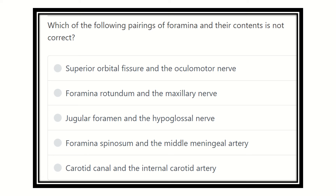Hi everyone, welcome back to another video for the MRCS exam. This is the question and answer session, which provides a lot of help in preparing for the MRCS exam. The question is: which of the following pairings of a foramen and its content is not correct? We have to find out which is incorrect — through which foramen the given structure does not actually pass. To answer this, we need to examine the foramina in the skull base and know their contents.